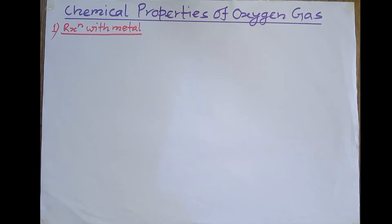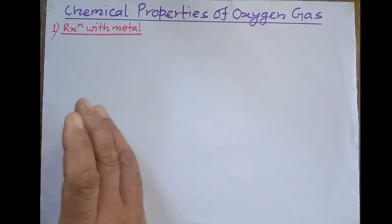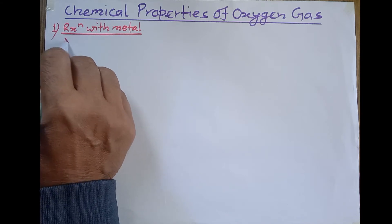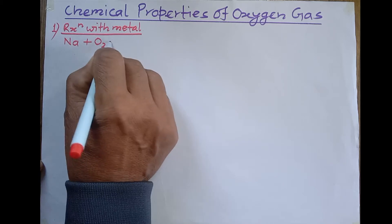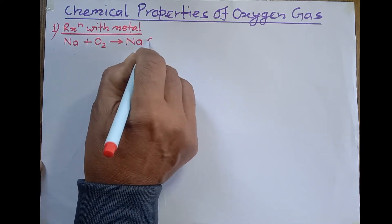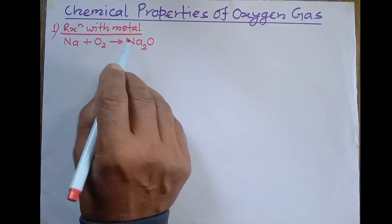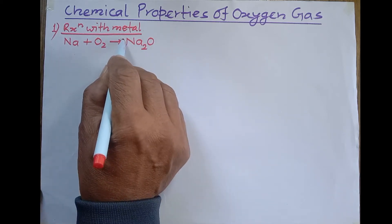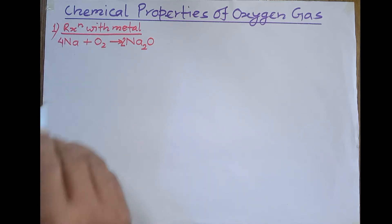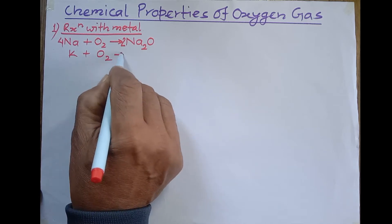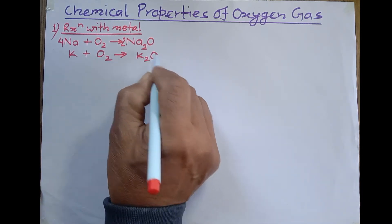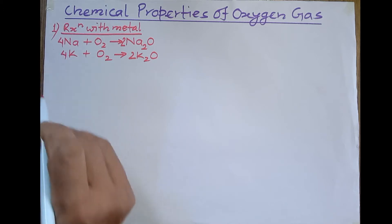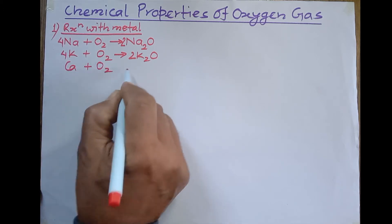Sodium, potassium, calcium, and magnesium — these metals burn in oxygen or in air and give metallic oxides. For example, sodium burns in oxygen or in air and forms sodium oxide (Na₂O). In the same way, potassium also reacts with oxygen while burning to form potassium oxide, and calcium reacts with oxygen while burning to form calcium oxide (CaO).